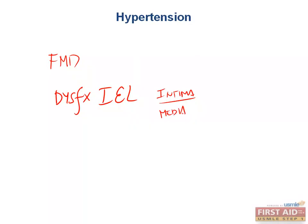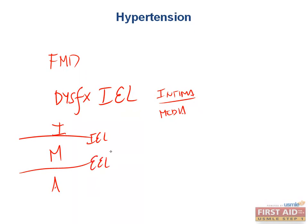Let's continue to think about this in a way that ties in fundamentals that test examiners like to test you on. We have our intima, media, and adventitia, separated by the internal elastic lamina and external elastic lamina. The internal elastic lamina is the outermost part of the intima and separates the intima from the media. In patients with fibromuscular dysplasia, there is a completely disorganized internal elastic lamina.